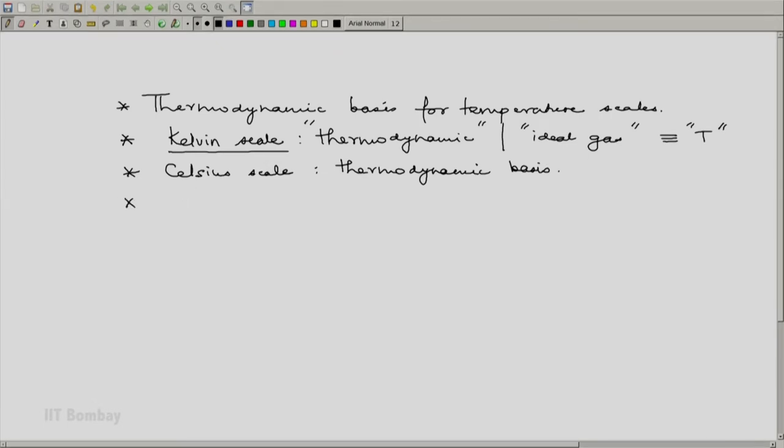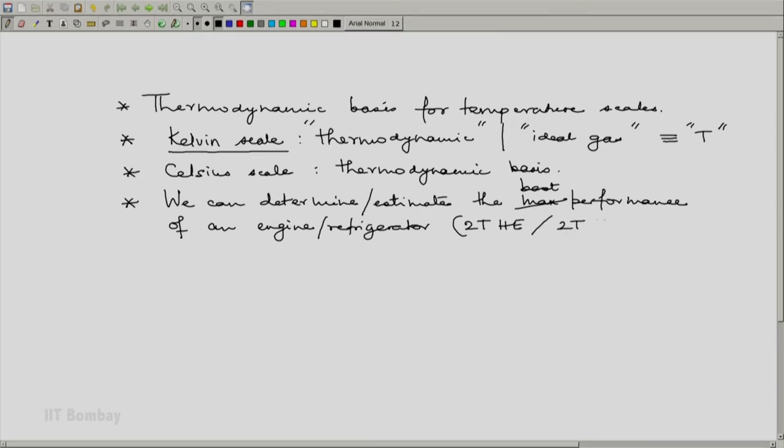And finally, an indirect consequence of all this is we can determine if we have perfect data or estimate if we do not have perfect data, the maximum performance or the best performance of an engine or a refrigerator based on the 2T heat engine or 2T refrigerator.